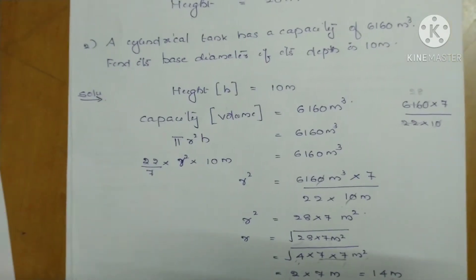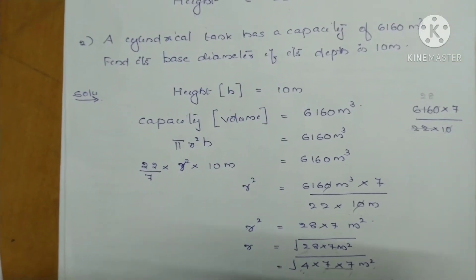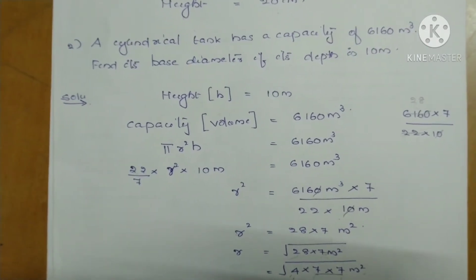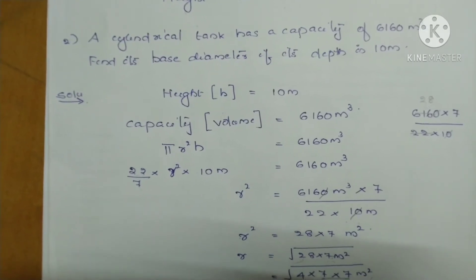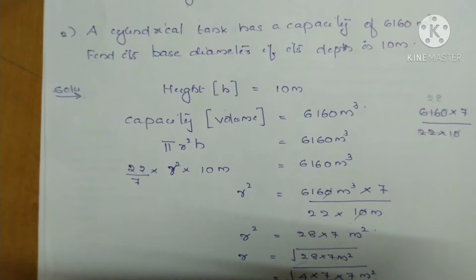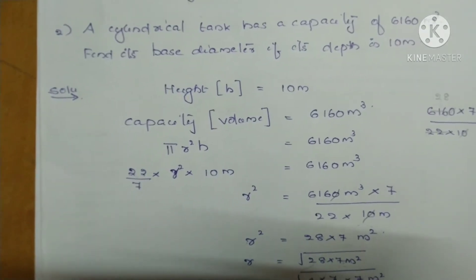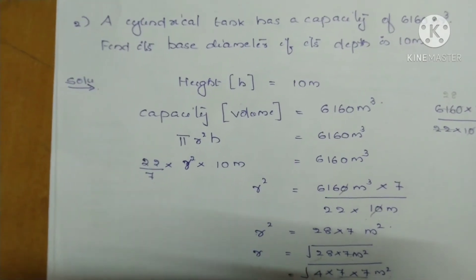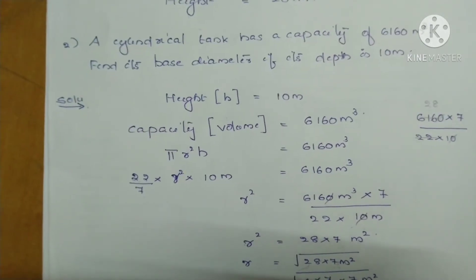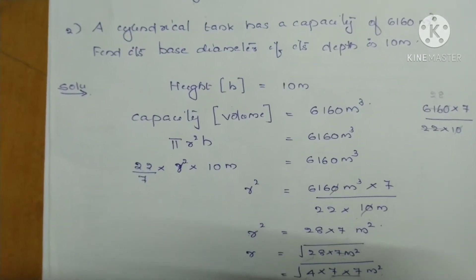A cylindrical tank has a capacity of 6160 m³. Find its base diameter if its depth is 10 m. Here capacity and depth: capacity means volume, depth means height. We have to find the base diameter. So using this capacity and depth, we can find out the base radius. After that we can find base diameter.